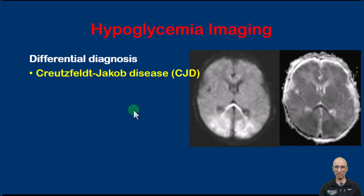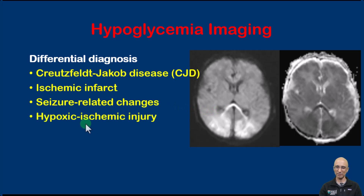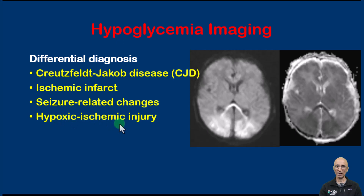In terms of differential diagnosis, which can overlap with hypoglycemia on imaging, we need to consider CJD, though this would be unusual in neonates. It is also important to consider ischemic infarction, which is usually focal and unilateral. Seizure-related changes can give similar imaging appearances, and the most important differential diagnosis to consider would be hypoxic ischemic injury. Neonatal encephalopathy has a wide differential diagnosis, and the two important diagnoses to consider are hypoxic ischemic injury and neonatal hypoglycemia.